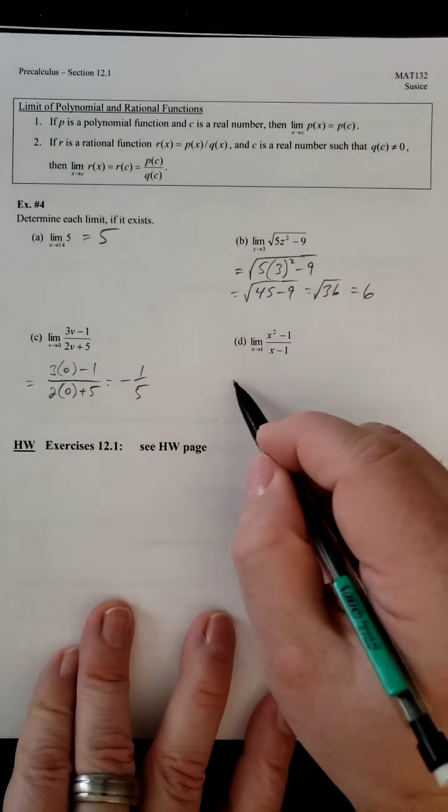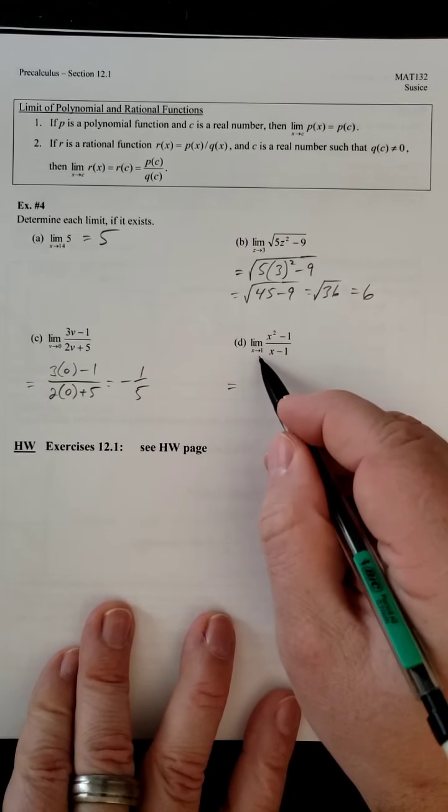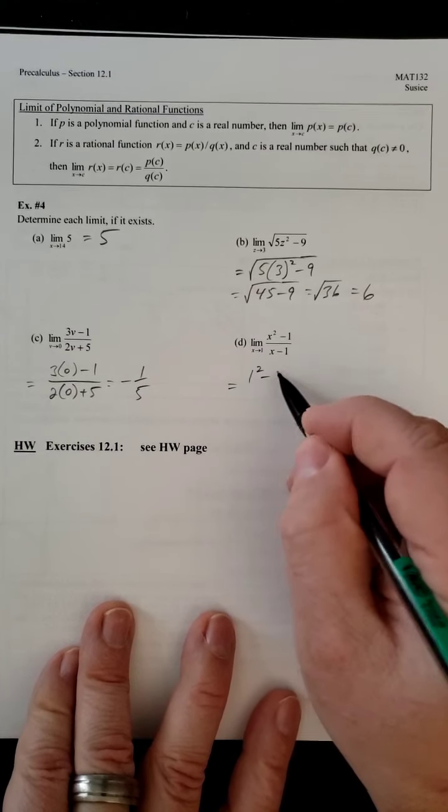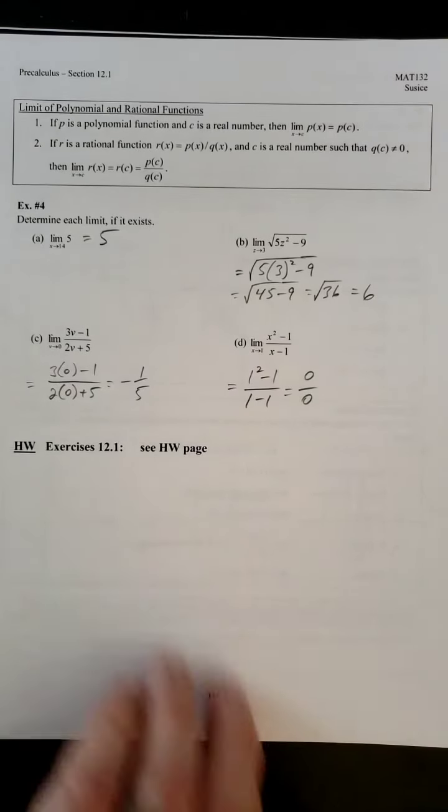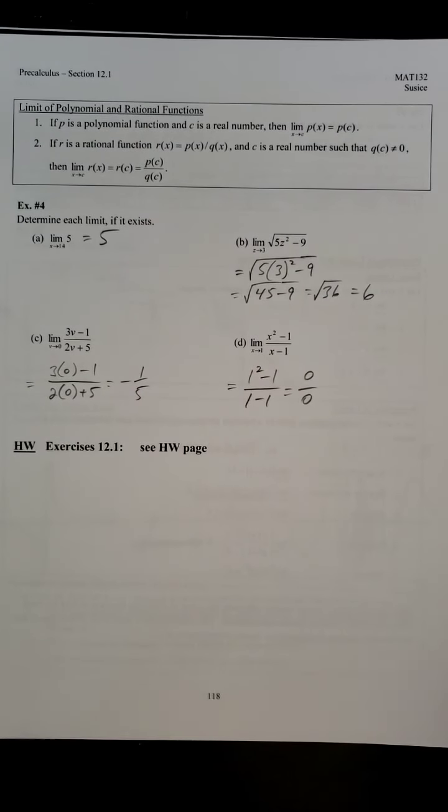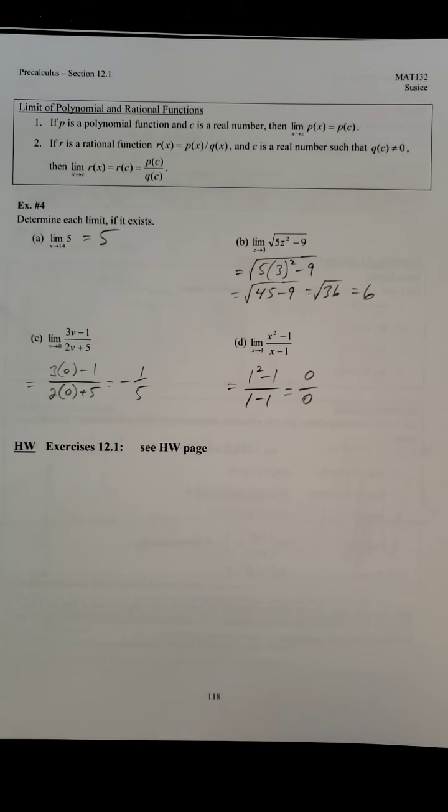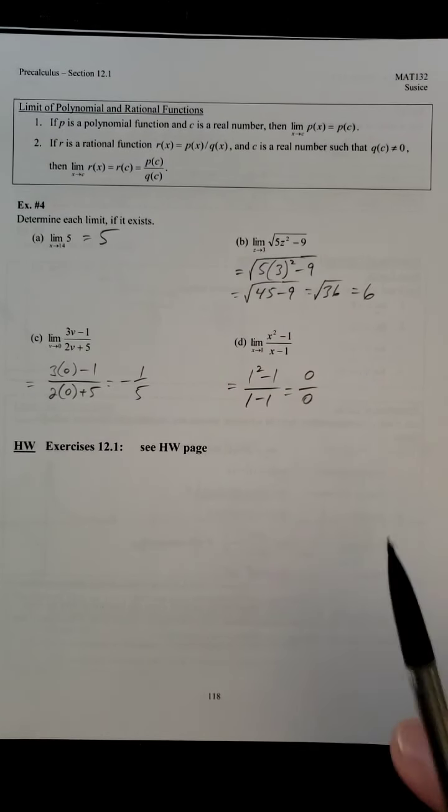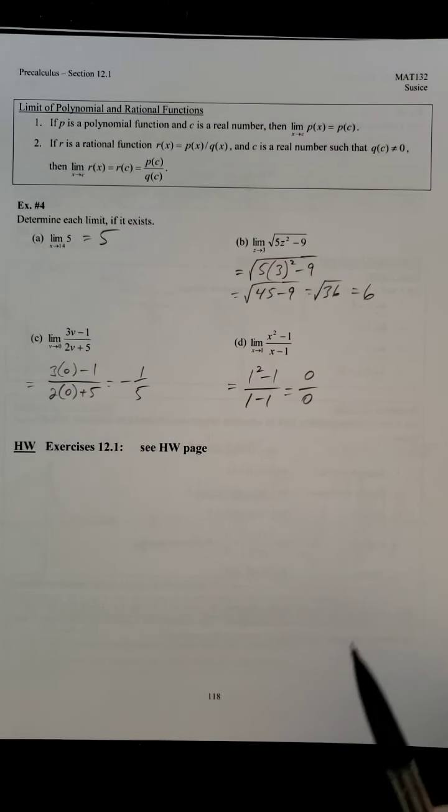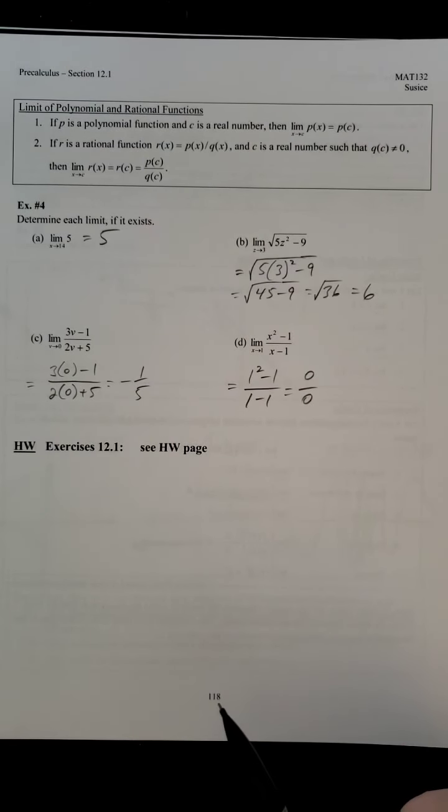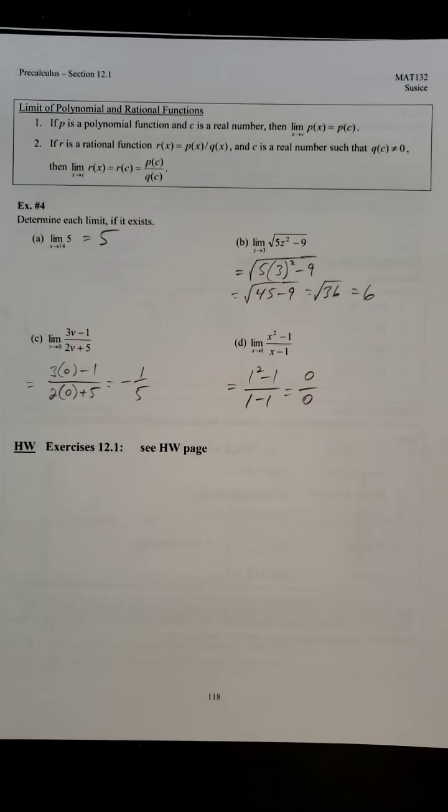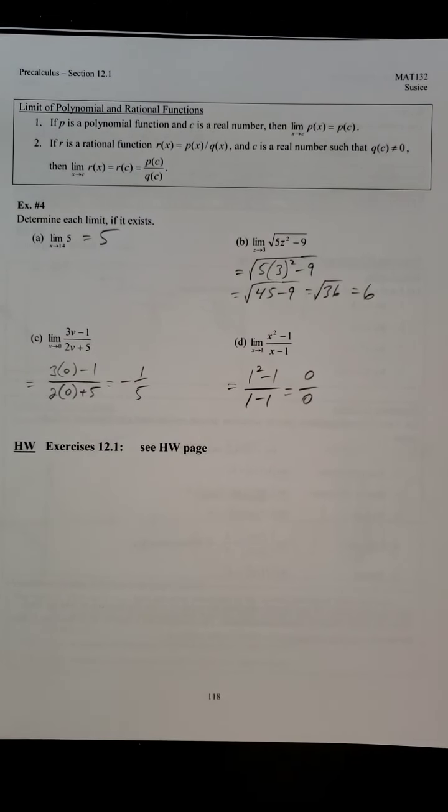All right. So, now, this last one, if we try direct substitution, we plug in 1. We have 1 squared minus 1, 1 minus 1. Uh-oh. We have 0 over 0. But we're going to find ways that we can tackle this algebraically. We don't have to graph these. And if you're looking at these suspiciously, you can probably see there's a trick that allows us to do some canceling. But we're going to explore that in much more detail in the next section. So, see you in the next videos.